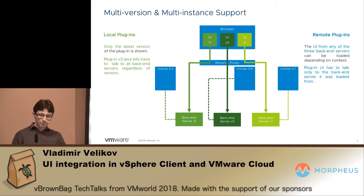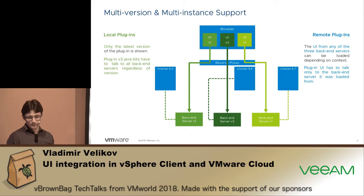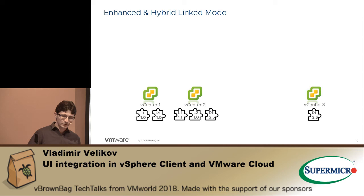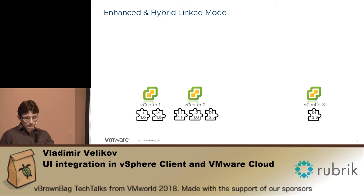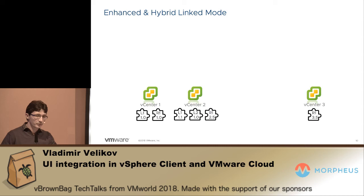In the opposite direction they talk directly to the particular backend server attached to the respective vCenter. Let's have a look at the case of enhanced and hybrid link mode. We have three vCenters that are standalone. The first one has a local and a remote plugin, the second one has the same plugins but with higher versions and an additional local plugin, and the third one has just one remote plugin.